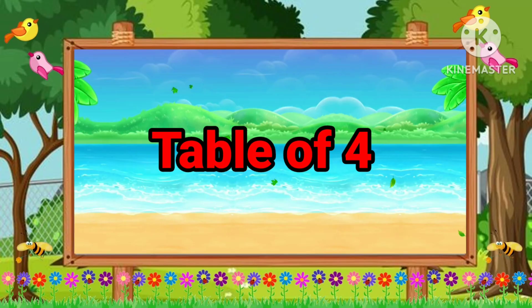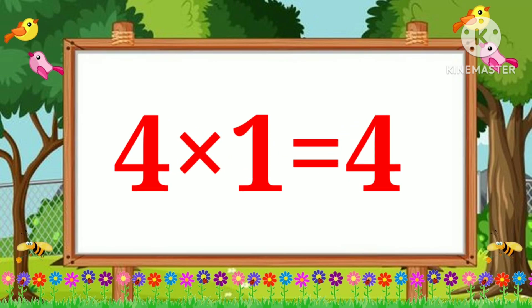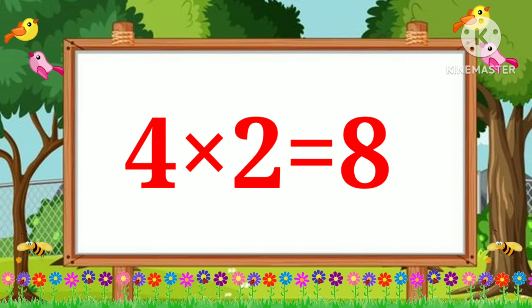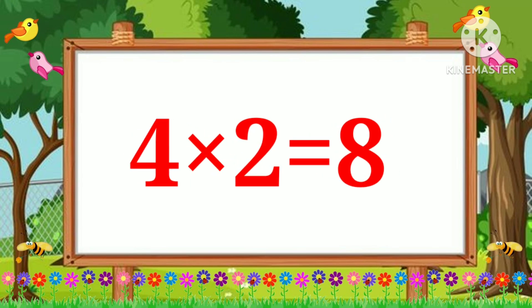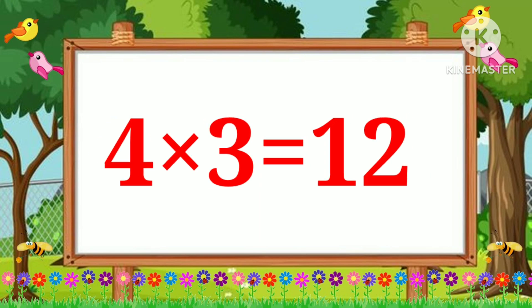Table of four. Four ones are four. Four twos are eight. Four threes are twelve.